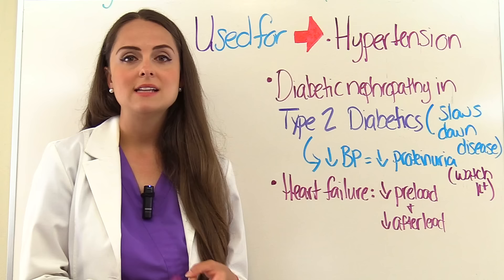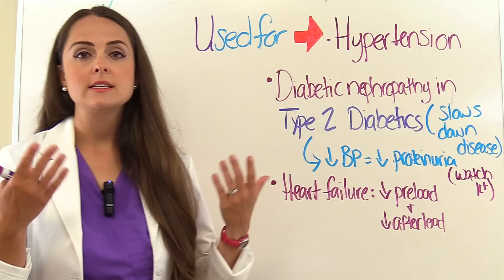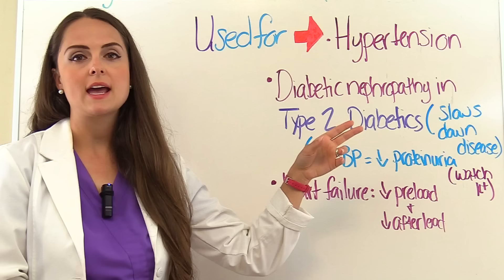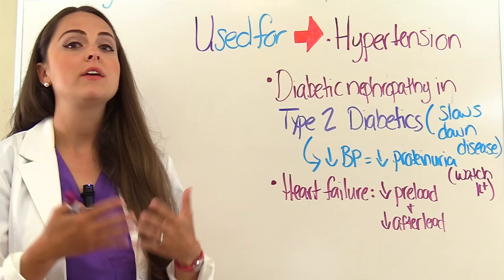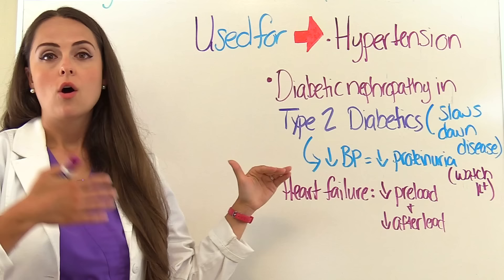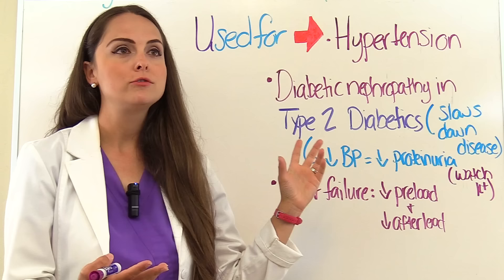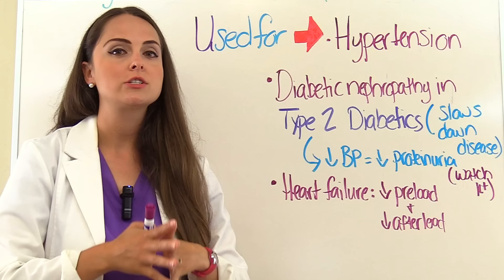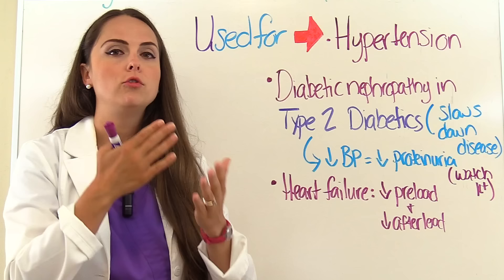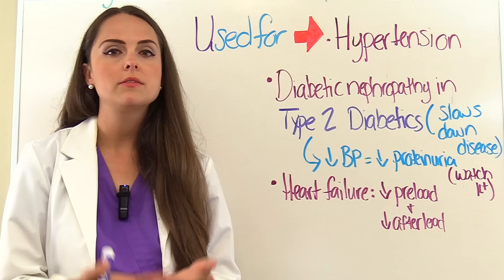Another condition ARBs can treat is diabetic nephropathy in type 2 diabetic patients — kidney disease related to diabetes. ARBs slow down the progression of the disease. ACE inhibitors also do this, so keep that in mind. ARBs lower the blood pressure, and patients with kidney disease can't filter protein properly, so protein leaks into the urine. The higher the blood pressure, the more protein leaks out. An ARB or ACE inhibitor lowers the blood pressure, decreasing protein in the urine and slowing down the progression of kidney disease over time.